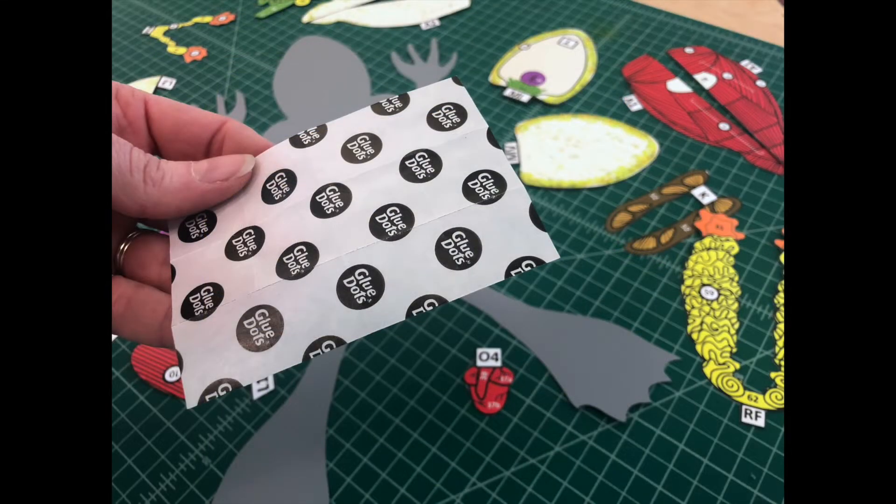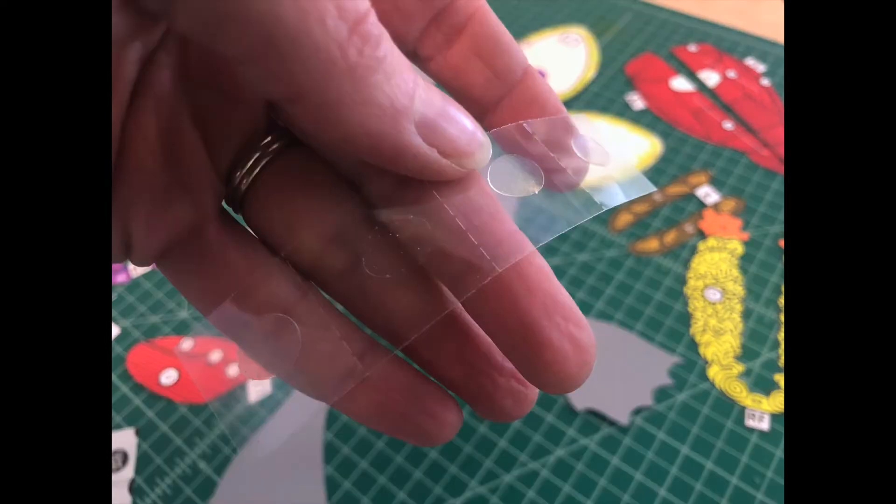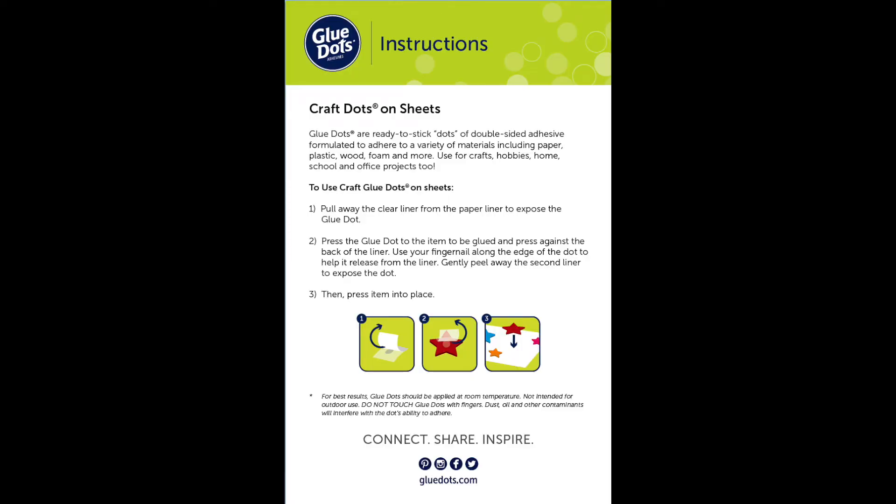The glue dots you received in your envelope come in perforated sheets of 12 dots. The Glue Dots team has been kind enough to provide us with instructions on how to use their glue dots. Take a moment to read the instructions provided here. Press pause if you need to.